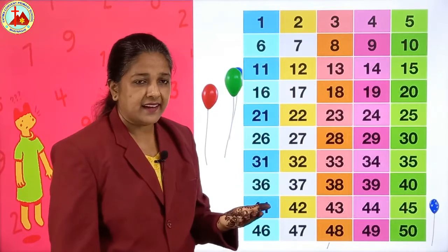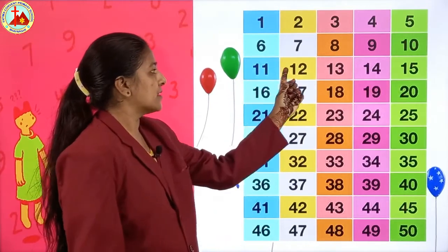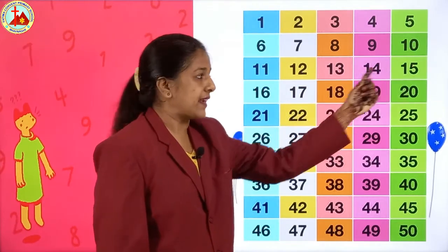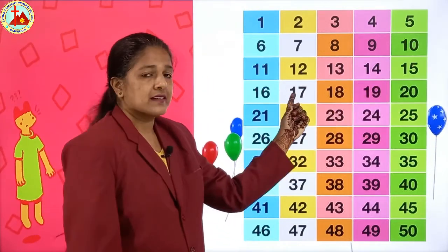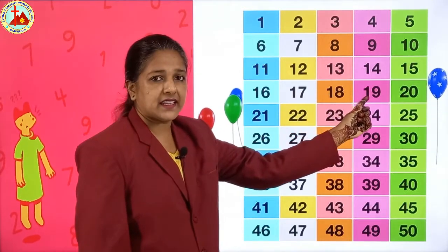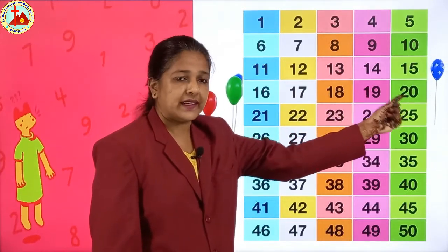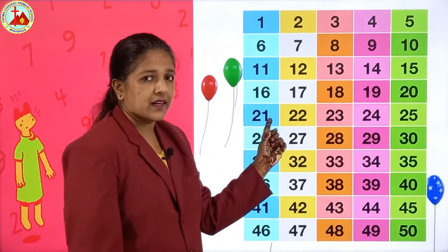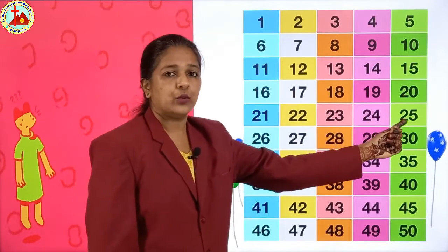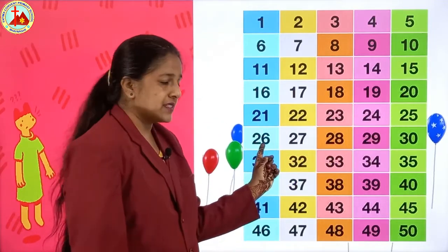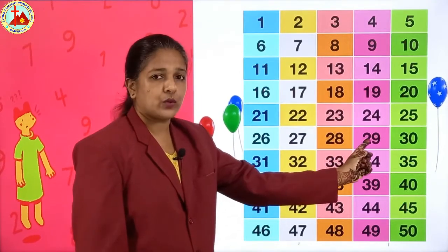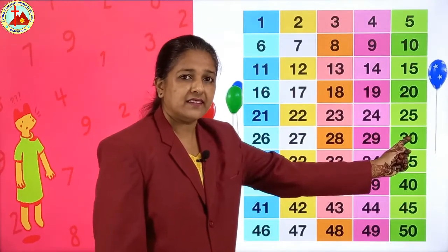After 10: 11, 12, 13, 14, 15, 16, 17, 18, 19 and 20. Then 21, 22, 23, 24, 25, 26, 27, 28, 29 and 30.